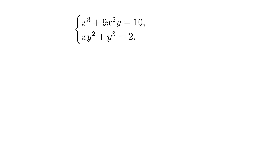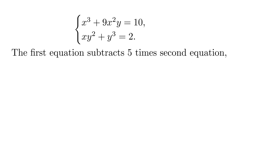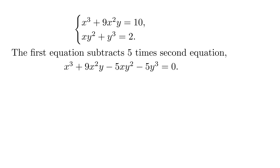In order to eliminate the constant, we multiply the second equation by 5, then calculate the difference of the two equations. We have x³ + 9x²y − 5xy² − 5y³ = 0.